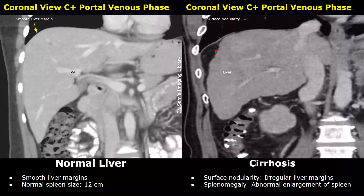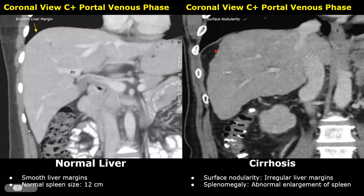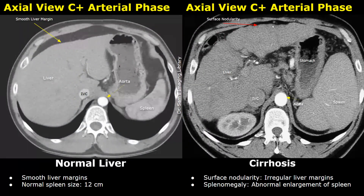These are coronal images of the normal liver and the cirrhotic liver. In the normal image the liver margins are smooth, whereas in the image on the right the liver has irregular margins, which is called surface nodularity. The liver also appears to be reduced in size. This is another case of liver cirrhosis — you can see even more surface nodularity and irregular liver margins in this case.